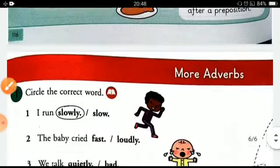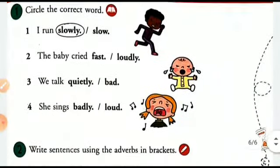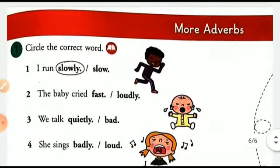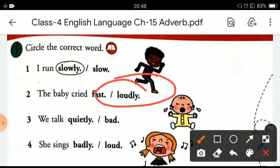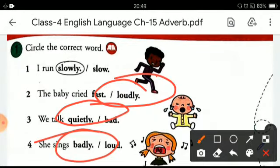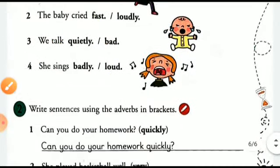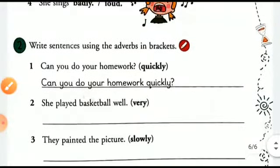Now let's do an exercise. You have to circle the correct word. The first one is already done: 'I run slowly.' The second one is: 'The baby cried loudly.' These are some adverbs that end with 'ly.'